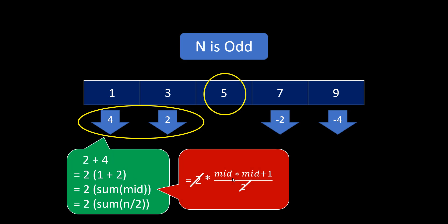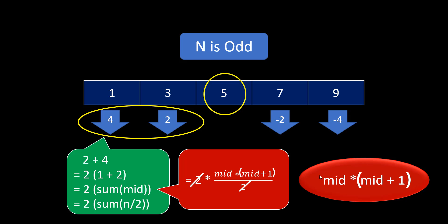Now, this sum of mid can also be rewritten as mid into mid plus 1 by 2. That is the formula for finding the sum of n elements. So, with this, this 2 and this 2 gets cancelled and my formula just remains to be mid into mid plus 1.